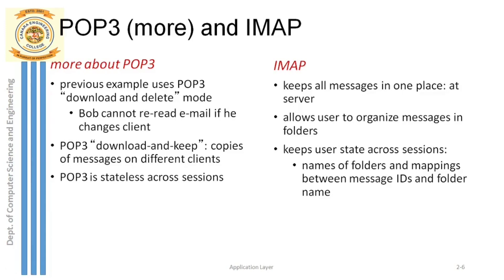IMAP provides the folder feature: users can create folders, organize messages inside folders, and move messages across folders. Another key difference is state information. In POP3, Bob is treated as a new user every time he logs in. But in IMAP, the server remembers the user across sessions — client information is maintained in the server, so the user is recognized on every login.